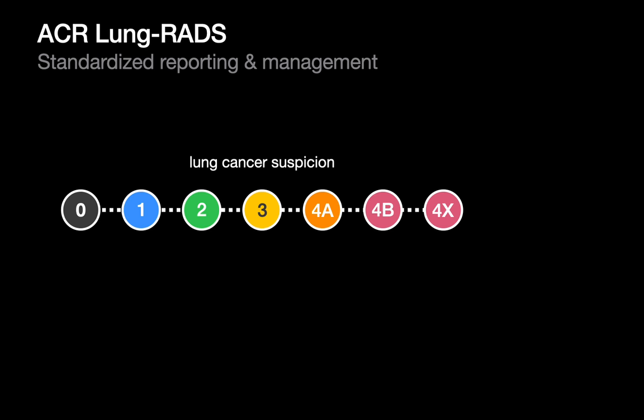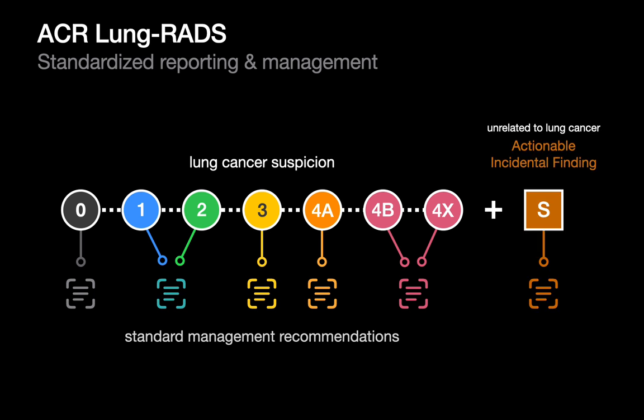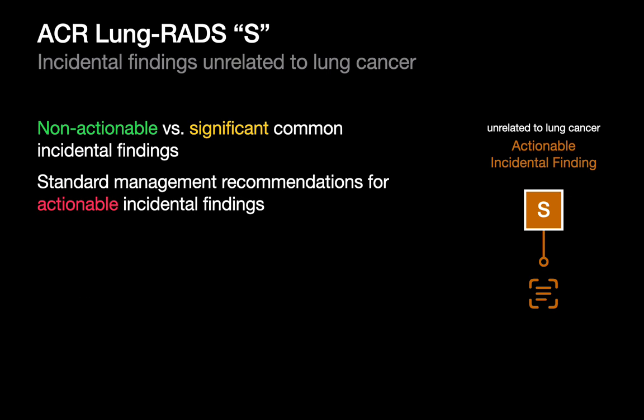And the book we're alluding to is the American College of Radiology's LungRADS system. LungRADS standardizes the interpretation, reporting, and management of lung nodules discovered on lung cancer screening CT studies. In this system, lung nodules are categorized into sequential buckets of lung cancer suspicion on a numerical scale, with standard management recommendations tied to each individual bucket. LungRADS also has an affordance for handling actionable incidental findings. When an actionable incidental finding unrelated to lung cancer is present, an S modifier suffix is appended to the LungRADS category score. The LungRADS guidelines also itemize which common incidental findings are non-actionable and which are significant, with standard management recommendations assigned to significant ones.